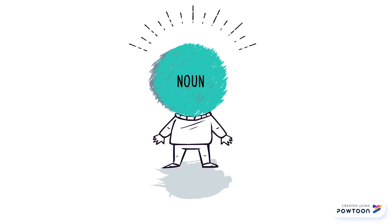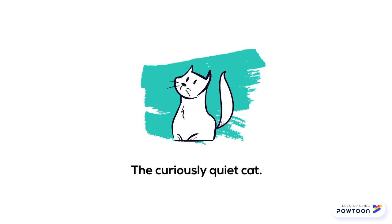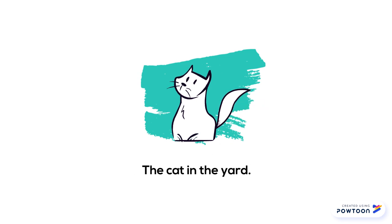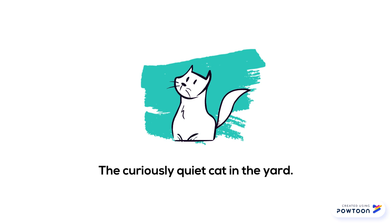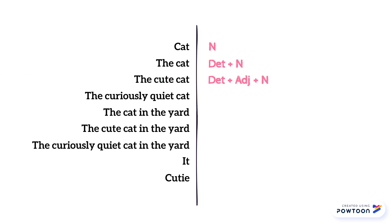Let's see the examples. So these are the noun phrases we saw. On the first one, 'cat,' we have just a noun. On 'the cat,' we have a determiner and a noun. On 'the cute cat,' we have a determiner, an adjective, and a noun.